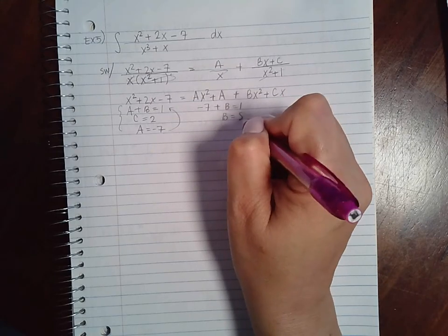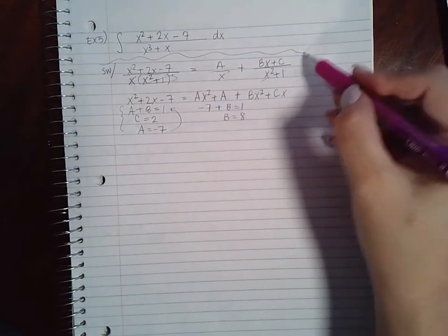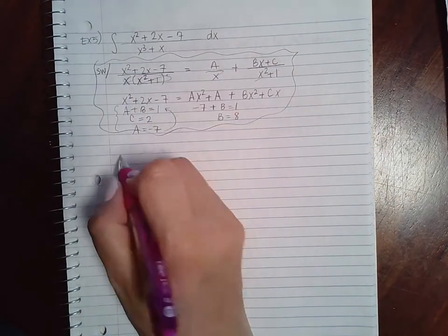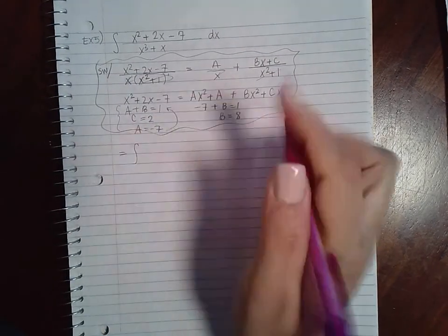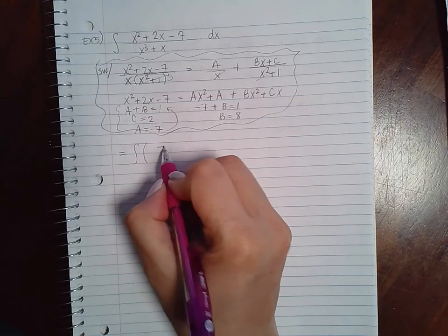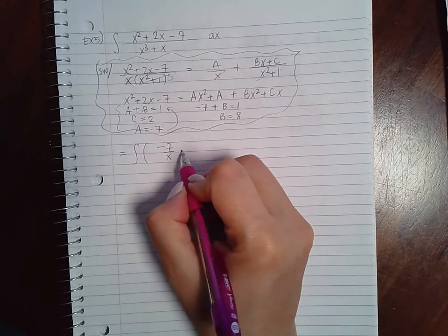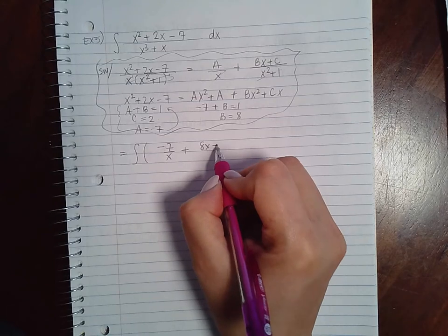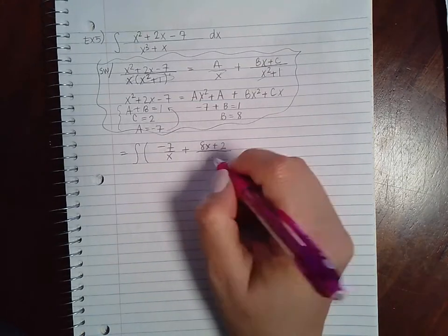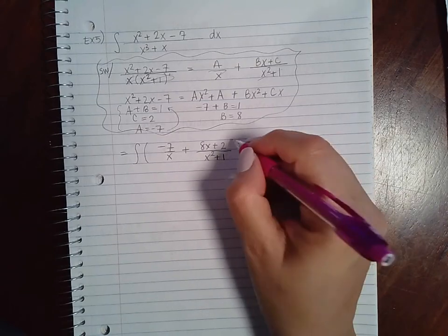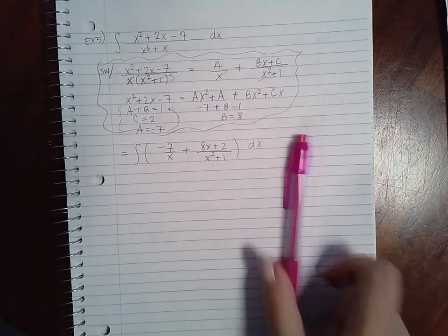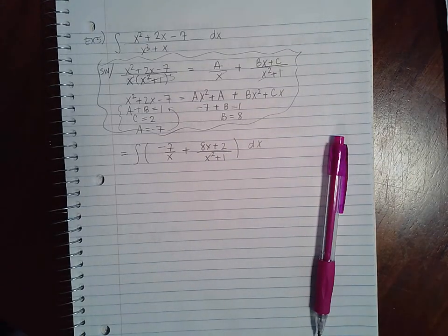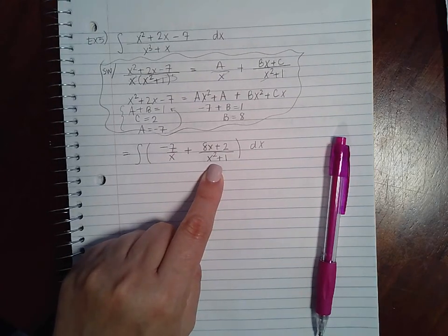So again, this is all my side work. I'm going to rewrite this integral as negative 7 over x plus 8x plus 2 over x squared plus 1 dx. Now I can't exactly use u-substitution because I would only get 2x, not 2x plus a constant.